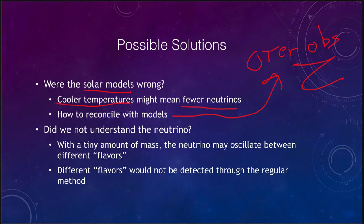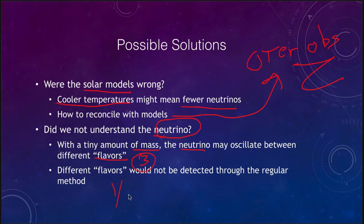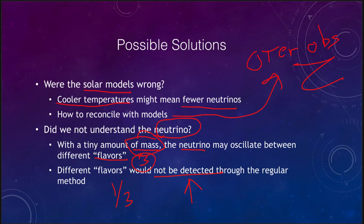The other possibility: did we not fully understand the neutrino? It was determined that with a very tiny amount of mass, neutrinos could oscillate between different flavors — and in fact there are three of these flavors. The experiment was set up only to detect one flavor; the others would not be detected by this method. That would mean we'd detect only one-third, because by the time neutrinos reached Earth, of every 100 neutrinos sent from the Sun only 33 would still be in the same form — the others would have converted to other forms which could not be detected.